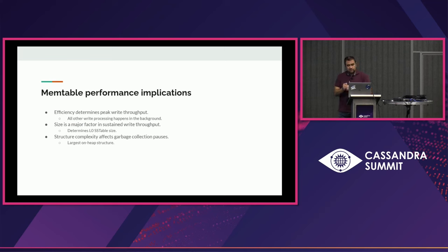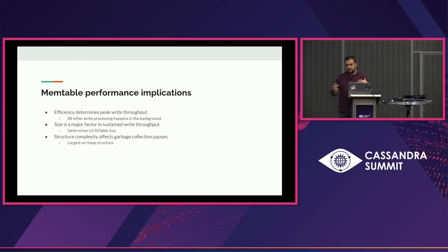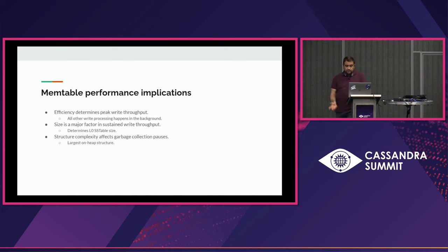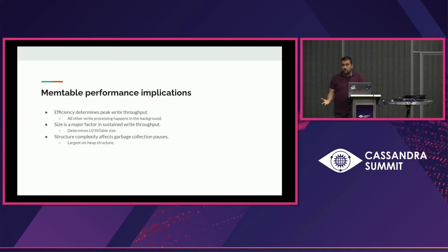The memtable also matters because the bigger it is, the bigger the level-0 SSTables we can create. These SSTables determine the height of the compaction hierarchy — how much work compaction has to do for reads to be fast. Additionally, memtables stay in memory, which largely means they stay on heap. Because they stay on heap for a long time, they're not easily handled by the garbage collector, and their internal complexity makes them hard to process.